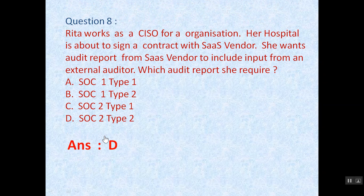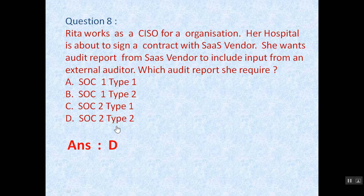For question number 8, since SOC 1 report focuses on financial controls only, options A and B are ruled out. Since a Type 2 report contains input from the external auditor, the correct answer is D.